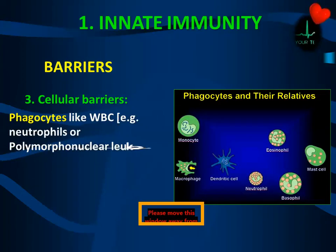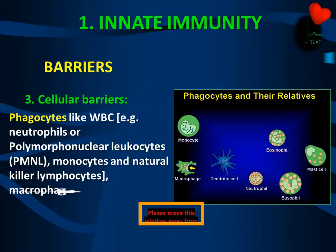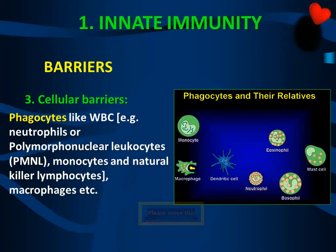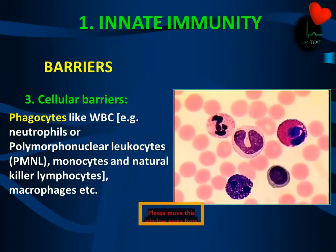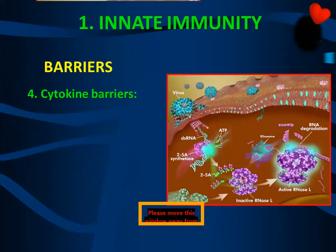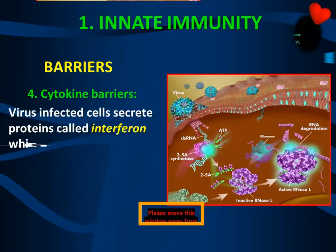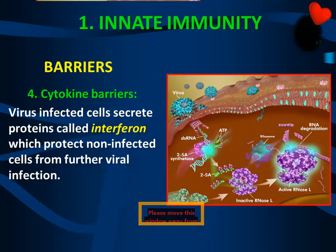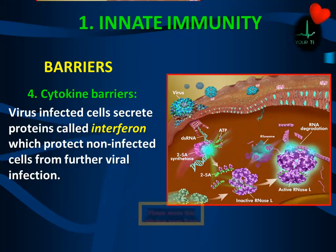Cellular barriers include WBCs, particularly neutrophils — also called polymorphonuclear leukocytes — and monocytes. When monocytes become activated, they are called macrophages. Natural killer lymphocytes are also a cellular barrier. Cytokine barriers include interferon — a protein released from virally infected cells that informs healthy cells about the virus. The virus-infected cells secrete proteins called interferon, which protect non-infected cells from further viral infection.